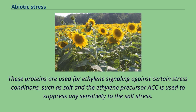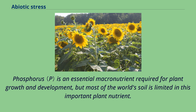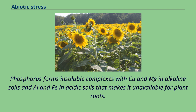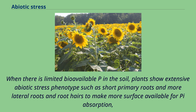Phosphorus is an essential macronutrient required for plant growth and development, but most of the world's soil is limited in this important nutrient. Plants can utilize phosphorus mainly in the form of soluble inorganic phosphate, but are subjected to abiotic stress of P limitation when there is not sufficient soluble PO₄ available in the soil. Phosphorus forms insoluble complexes with Ca and Mg in alkaline soils and Al and Fe in acidic soils, making it unavailable for plant roots. When there is limited bioavailable P in the soil, plants show extensive stress phenotypes such as short primary roots and more lateral roots and root hairs, and exudation of organic acids and phosphatase to release P from complex molecules.